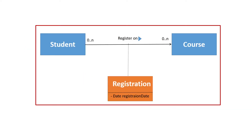We need to define a new class called Registration, which holds the registration date as an attribute. This Registration class is called an association class. In addition, to enable this Registration class to hold and manage the association, it should have a reference to a Course object and a reference to a Student object.